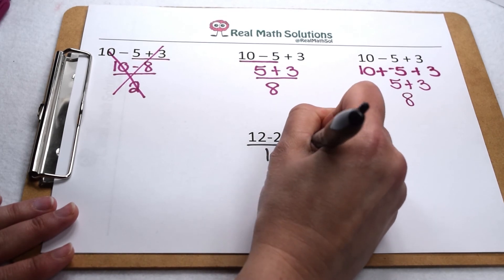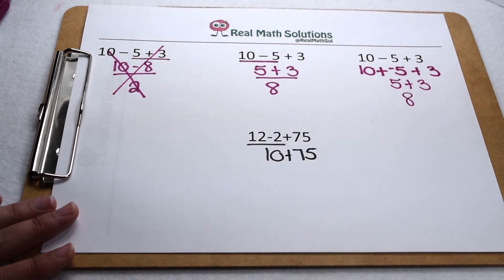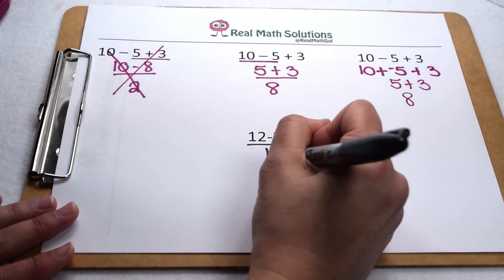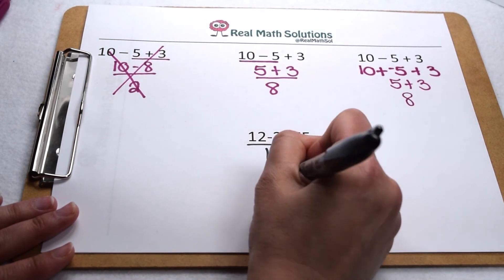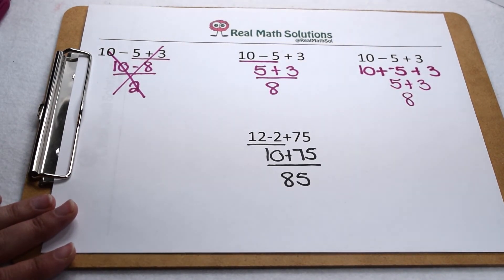so now we have 10 plus 75. The last step in our whole problem is going to be that 10 plus 75, which gives us a final result of 85.